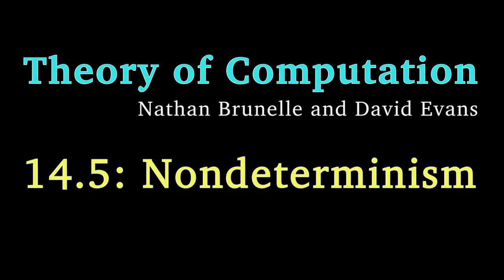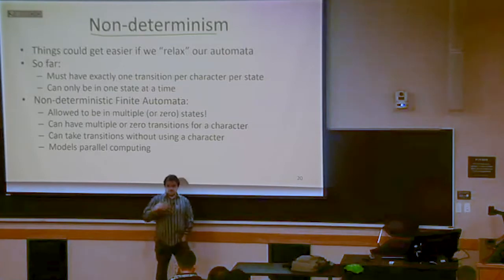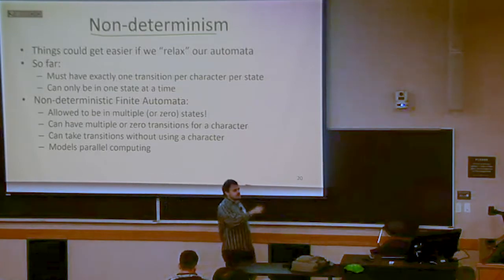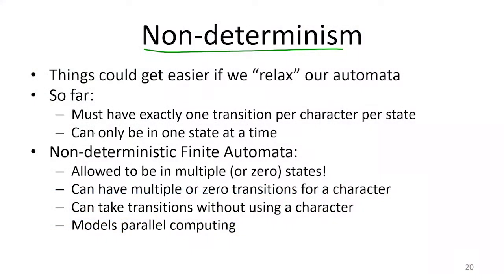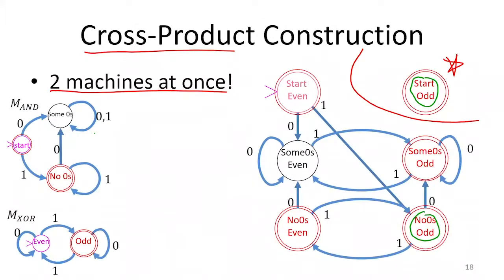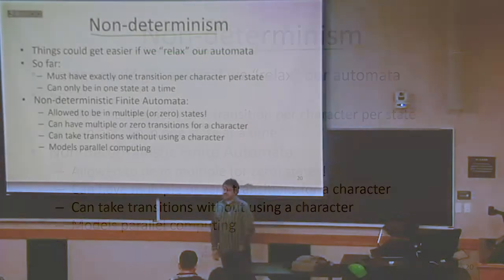We're going to talk about non-determinism, keeping in mind our ultimate goal is to show that anything we can do with a regular expression, we can do with a finite state automata. Doing these proofs like the union thing for the next batches of operations is going to get really difficult if we stick with our current finite state automata. So we're going to relax what our finite state automata can do a little bit in order to make it easier to prove the rest of these operations.